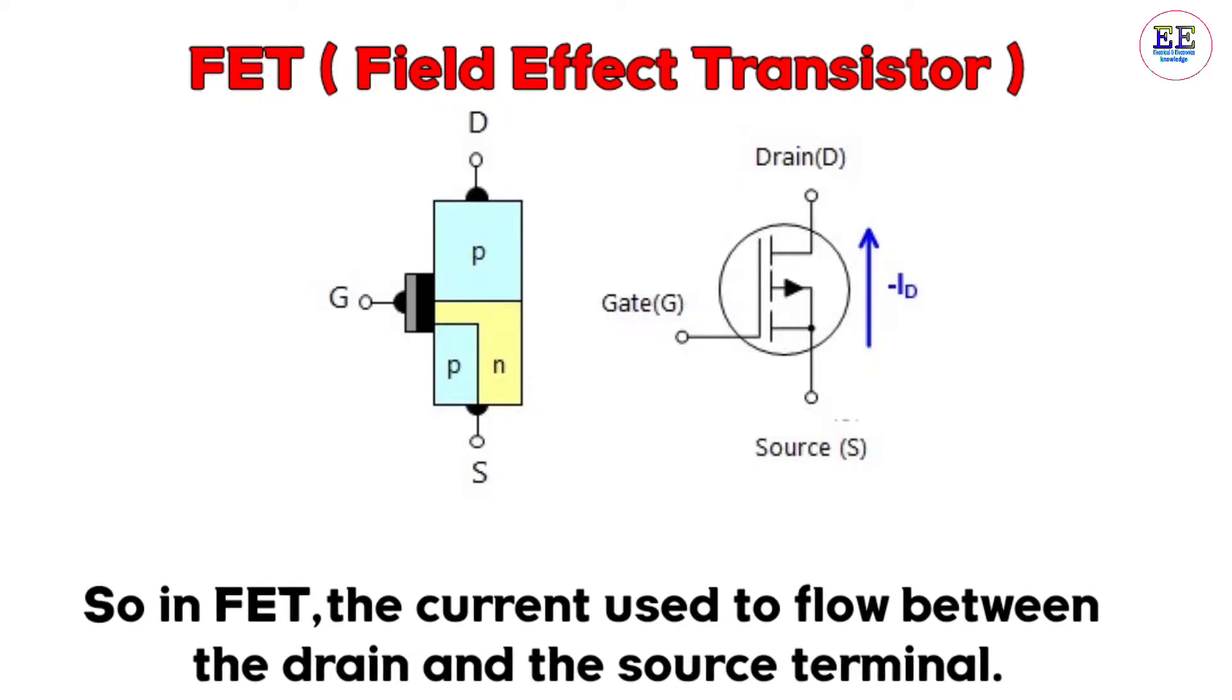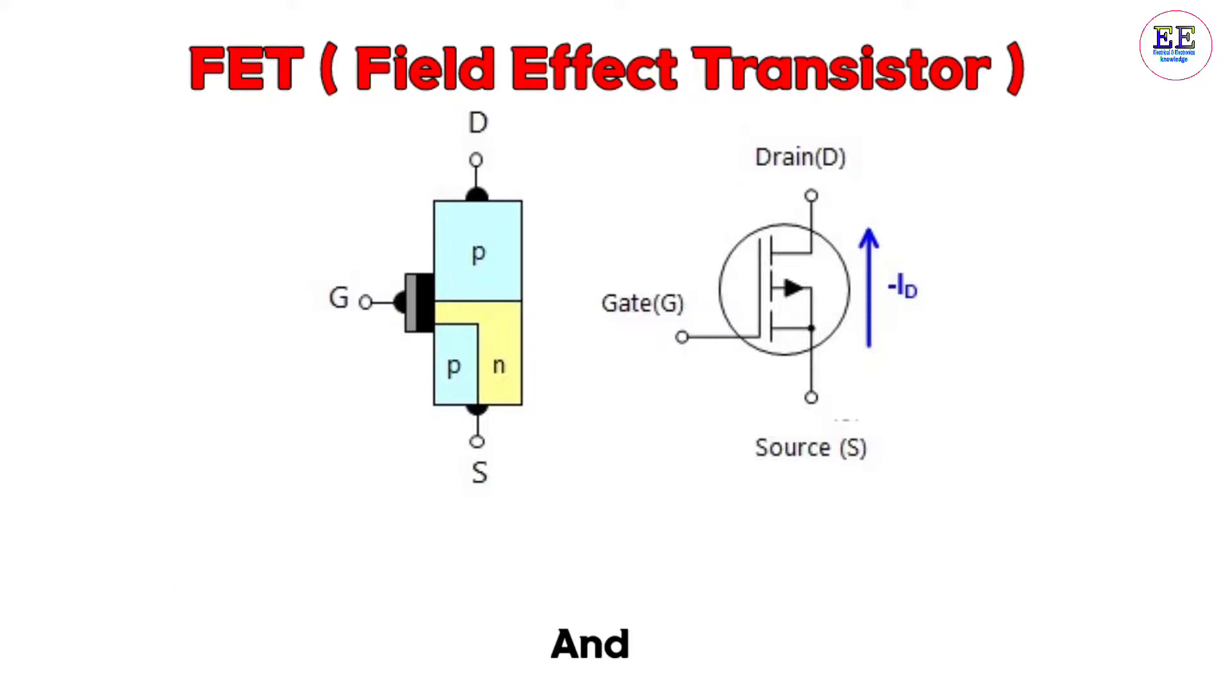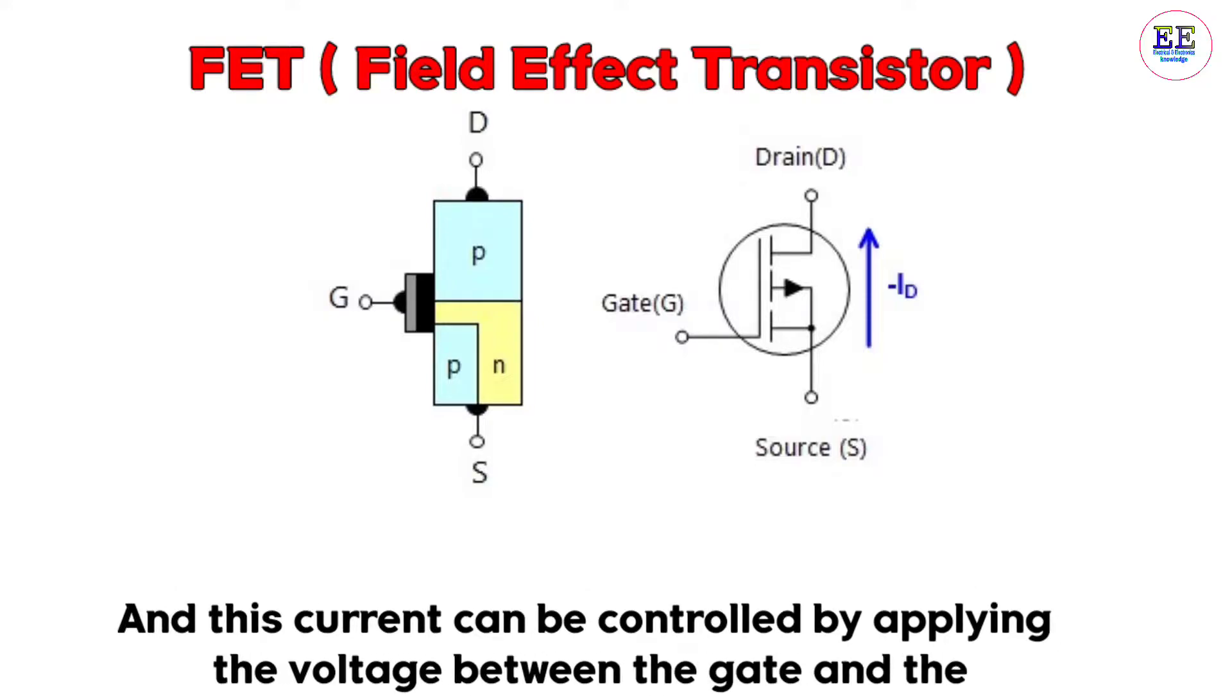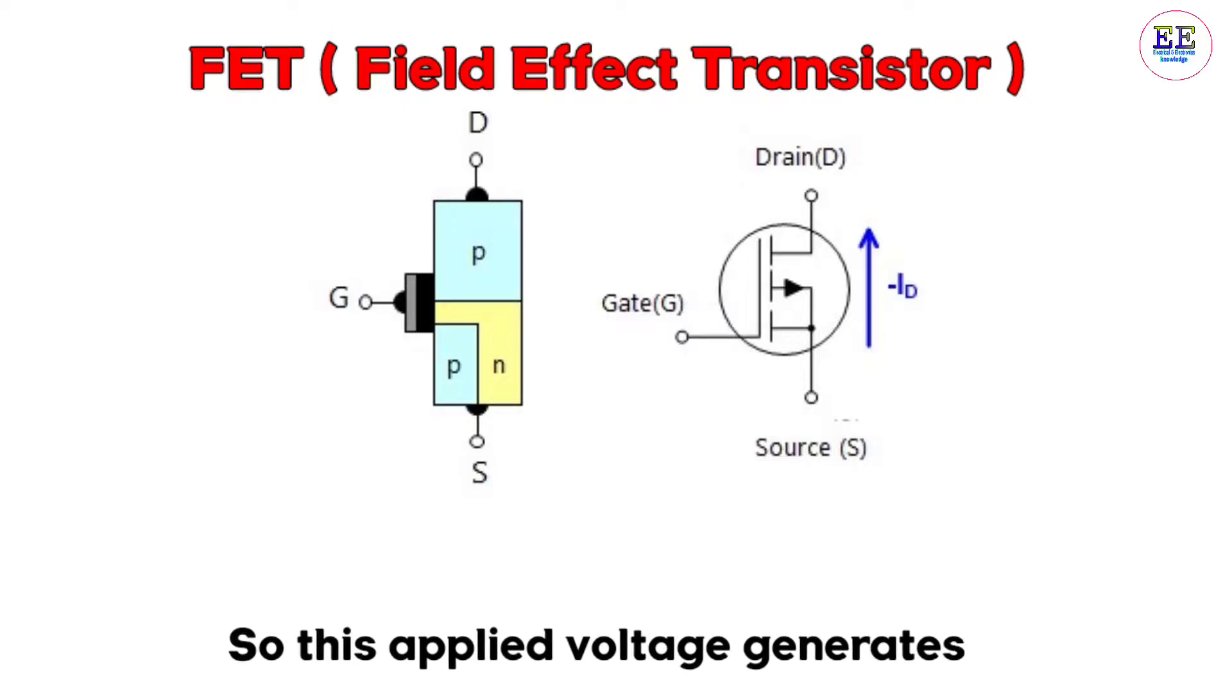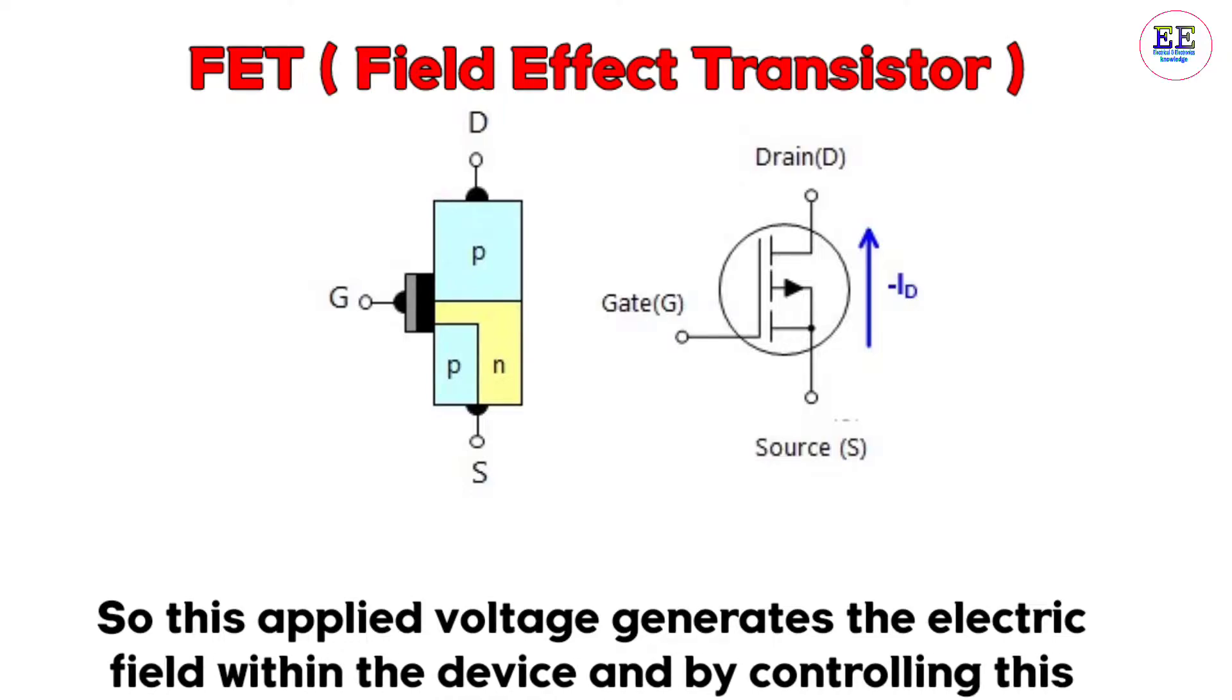In FET, the current flows between the drain and source terminals. This current can be controlled by applying voltage between the gate and source terminals.